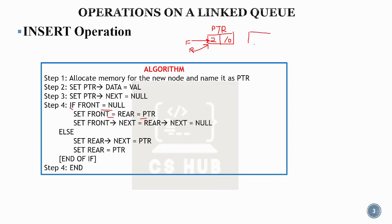A new node is created. The node's data part is assigned the value, and the next part is set to null. Now let's insert the node. We check: is front equal to null? No — front is pointing to the existing value. So let's go to the else branch. We need the rear pointer to perform the insertion. Set rear next equal to PTR, and rare is next pointed.